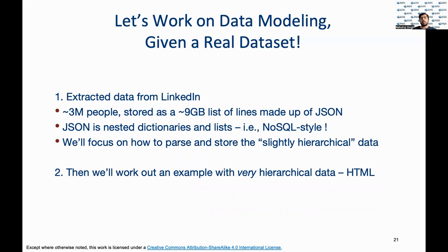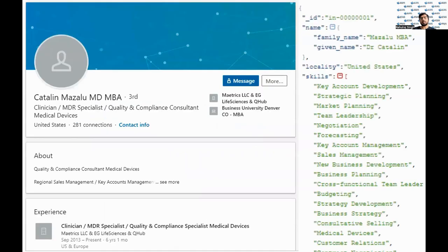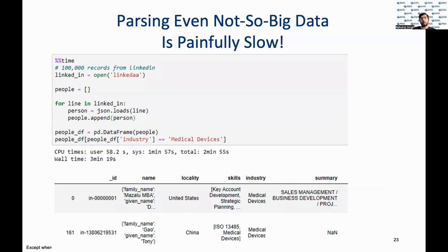Let us now work with a web-scraped dataset synthetically generated from LinkedIn. This is in the JSON format and therefore stored in a NoSQL style. This is what the LinkedIn entry looks like — to the right is the JSON format of the web page shown on the left. Notice that the wall time is 3 minutes and 19 seconds just for 100,000 records. What is making this slow? If we look inside the for loop, we see that it reads one line of text at a time and then parses it into a dictionary, which is one of the slowest steps, and it then adds the entry to a list. We will look at other ways of doing this to improve performance.